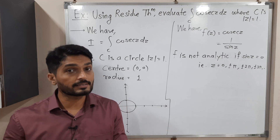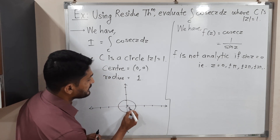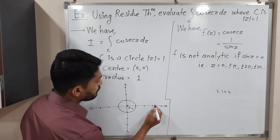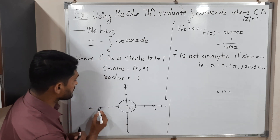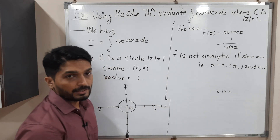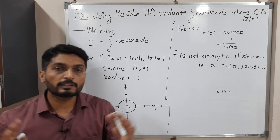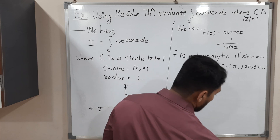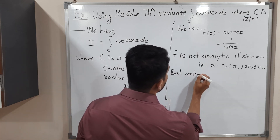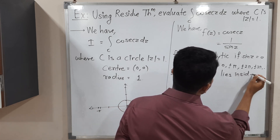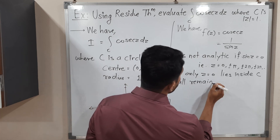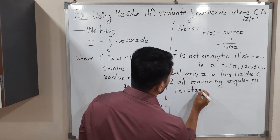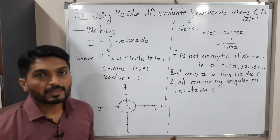Now we check whether those singular points lie inside or outside the circle. z = 0 obviously lies inside the circle. The next point is π ≈ 3.142, which will be somewhere outside the circle. Similarly, −π is on the other side outside, and ±2π are even farther away. All the remaining points definitely lie outside the circle. There is only one point which lies inside: z = 0. All the remaining singular points lie outside C.